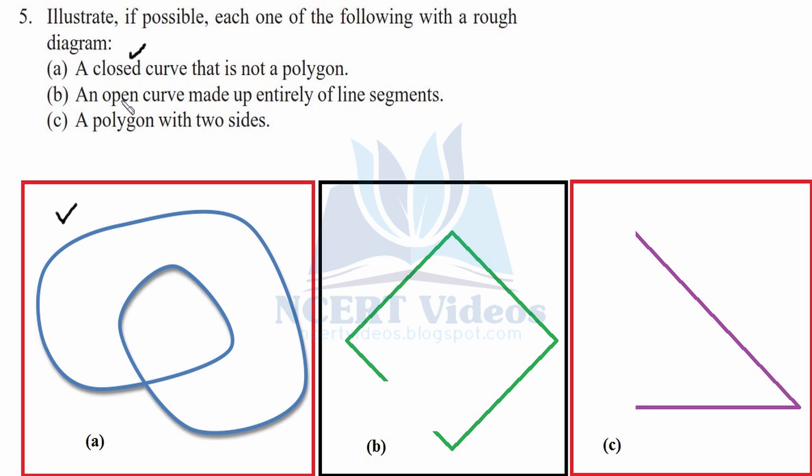Checking for the B part. An open curve made up entirely of line segments. This is an open curve, yes true. Open curve can be made. Made up entirely of line segments. This is a line segment and it is possible. Open curve can be made entirely of line segments. We tick it.